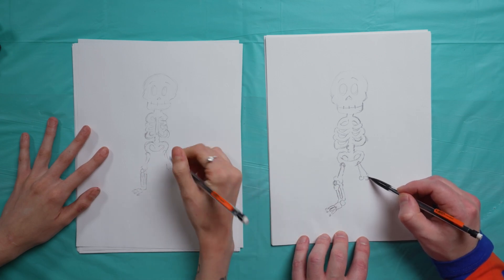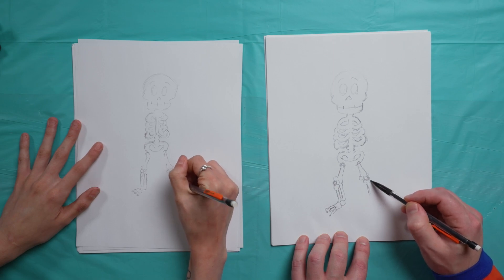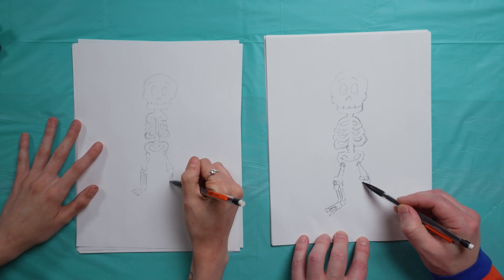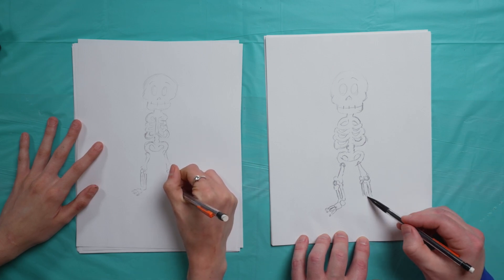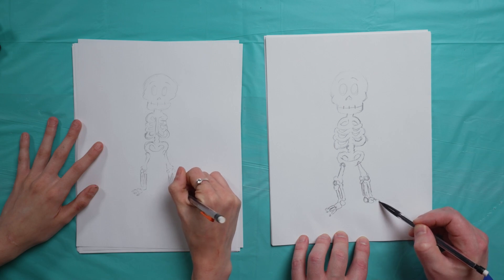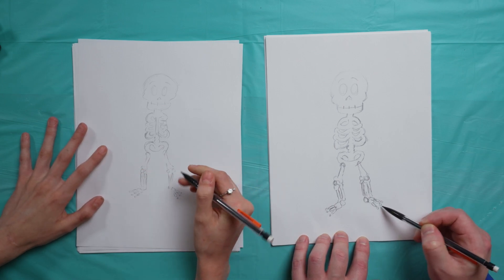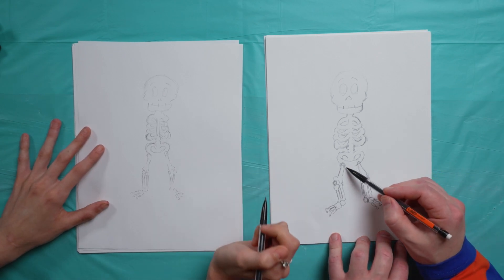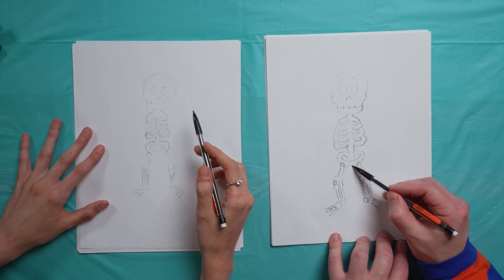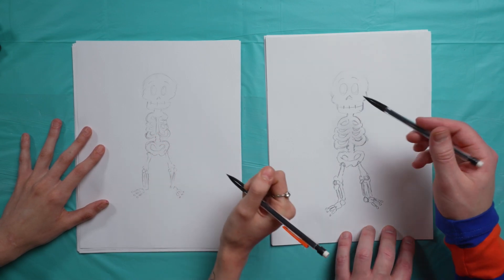Now we're going to do the same thing on this side. We'll sketch out a little knee, put another bone behind, toesies. Okay, there we have our legs.